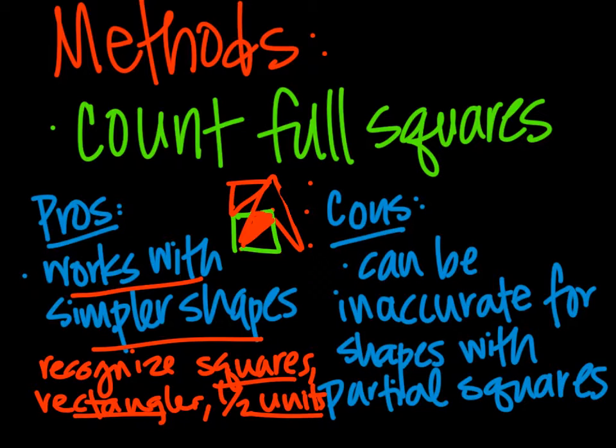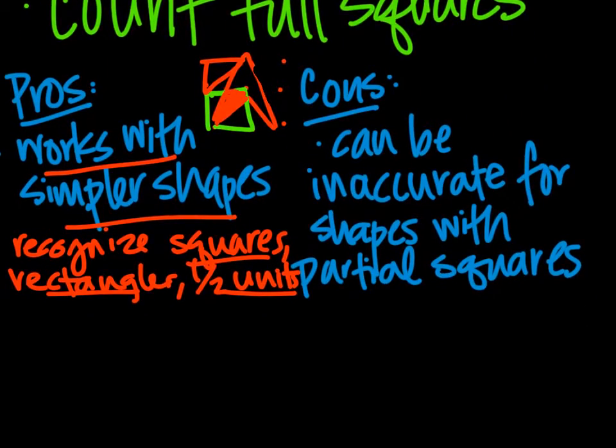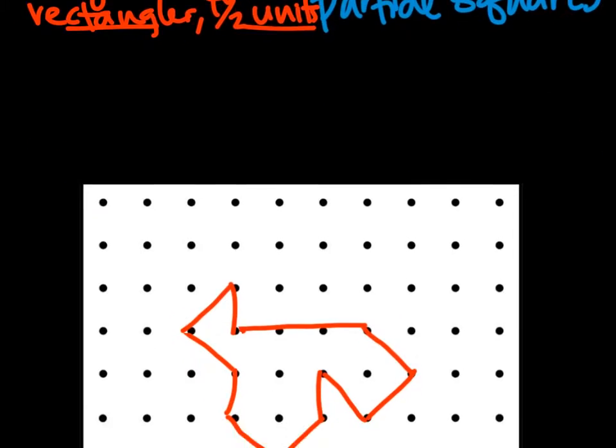Instead, it's important to look and be able to recognize only squares, rectangles, and half units - perfect half units. Some cons to this is it can be inaccurate for shapes that have partial squares. If it's any different than just a half a unit, then it can be really cumbersome and you're guessing as to how big the squares are. We need to be able to be accurate with this.